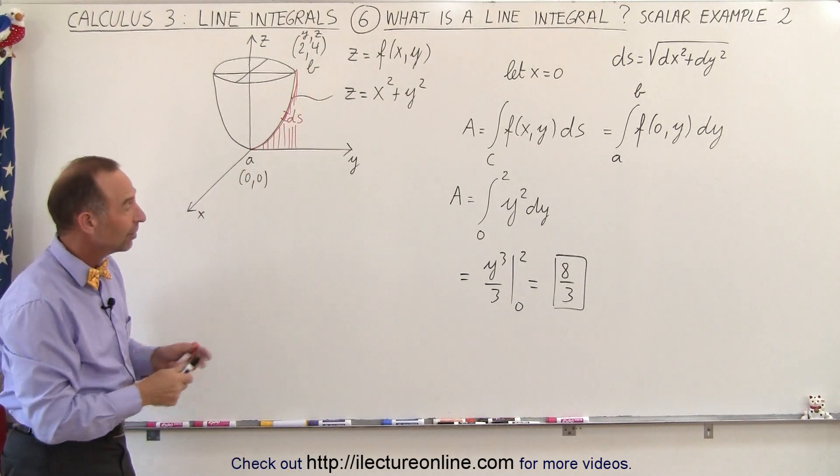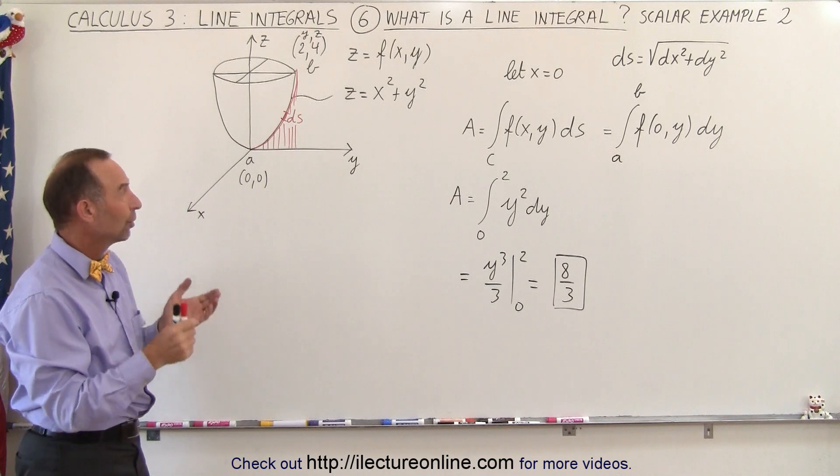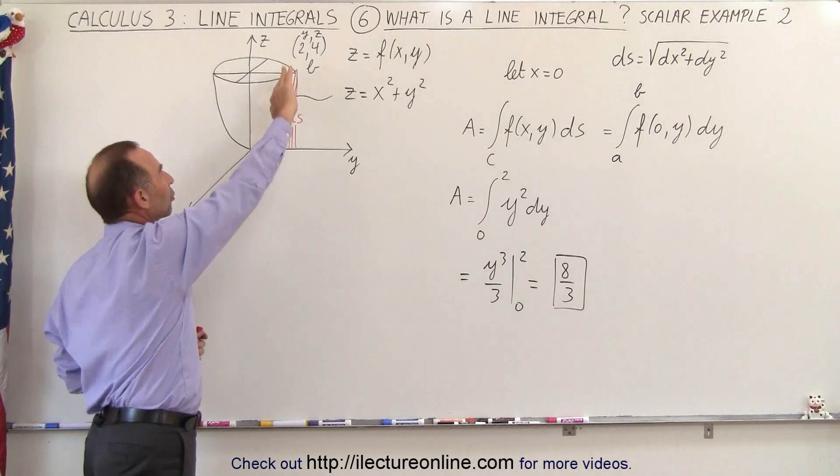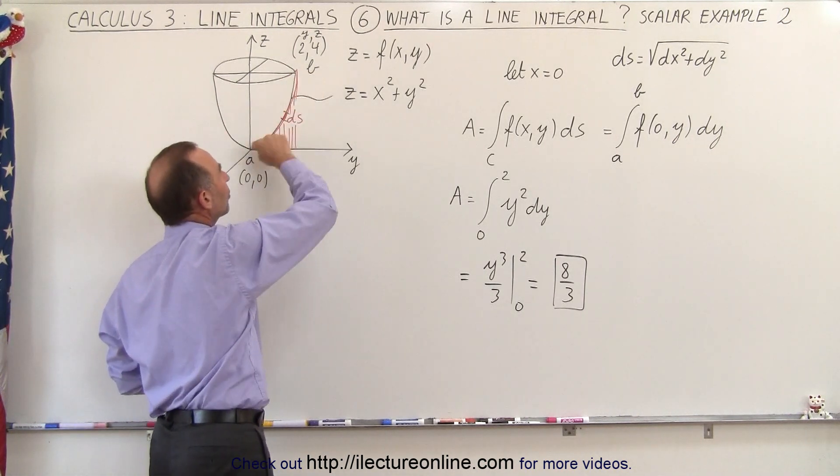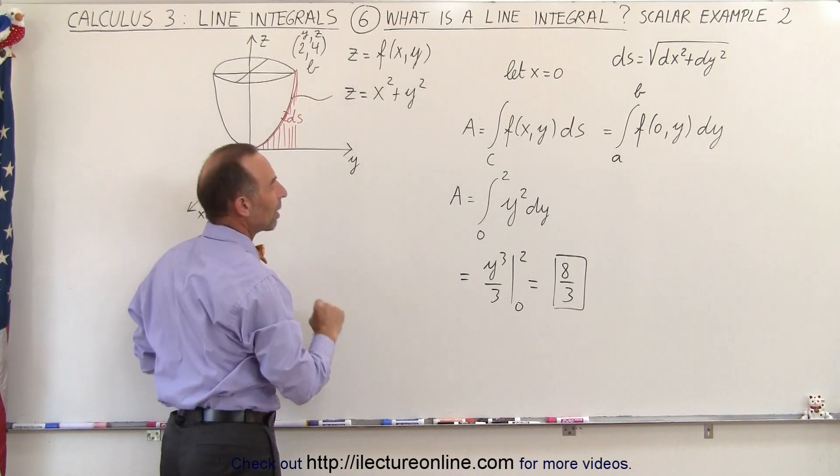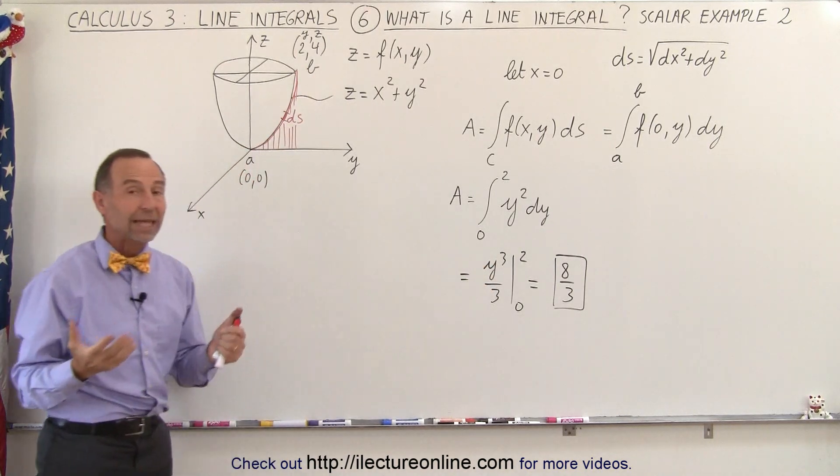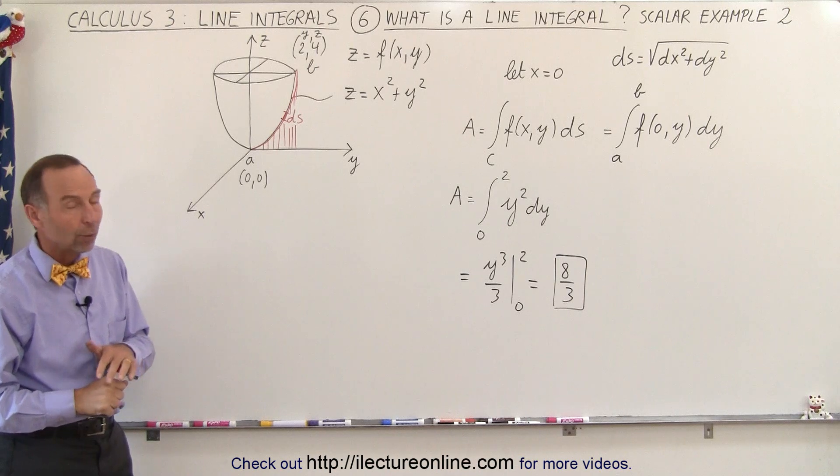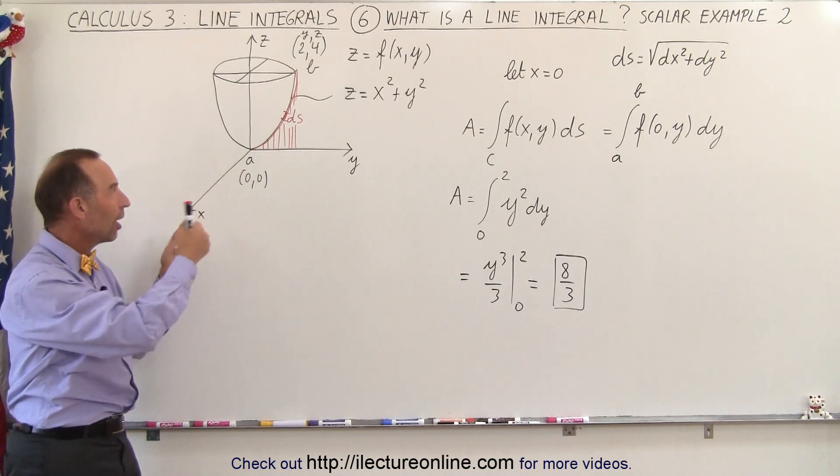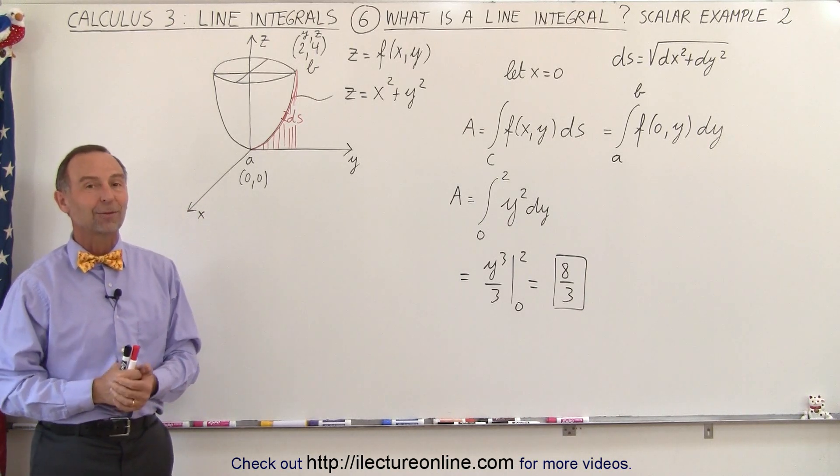And again, that's what the line integral is. In this case, since we're multiplying a scalar quantity with a scalar displacement or distance traveled, we can say that the answer will always be a scalar quantity, in this case the area underneath that path. And that's how it's done.